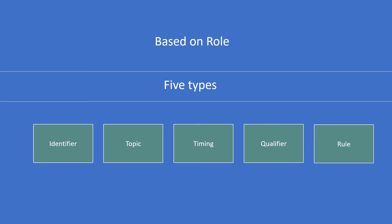The Study Data Tabulation Model is built around the concept of observations collected about subjects who participated in a clinical study. In an SDTM dataset, each observation can be described by a series of variables. Each variable can be classified according to its role. A role determines the type of information conveyed by the variable and how it can be used.